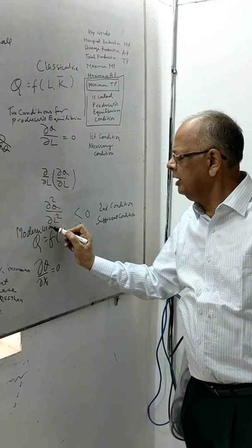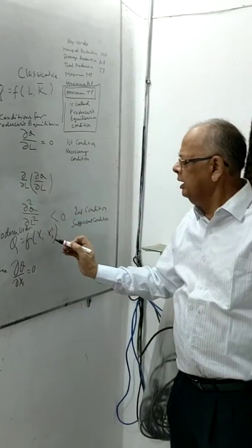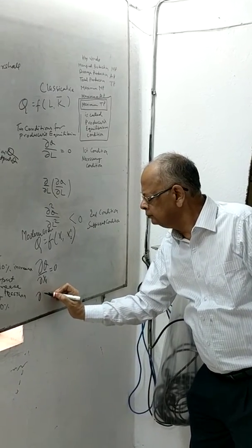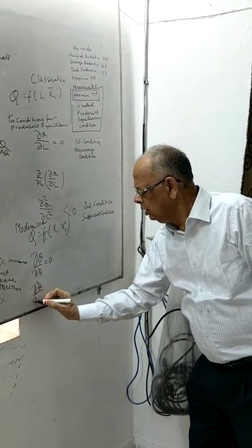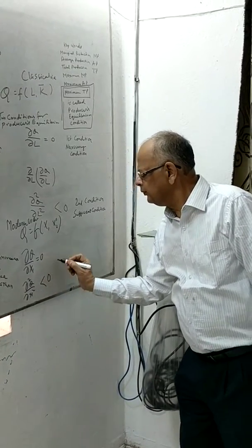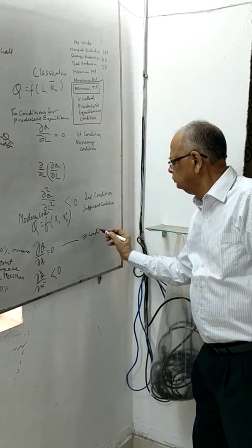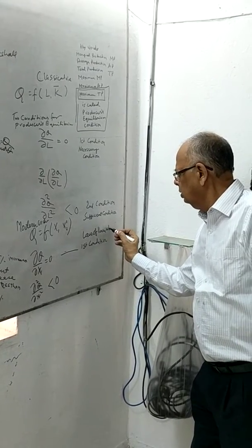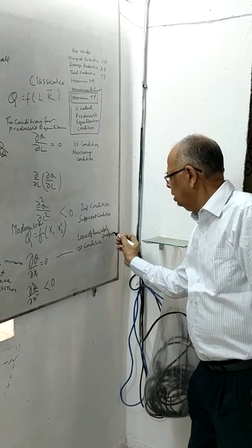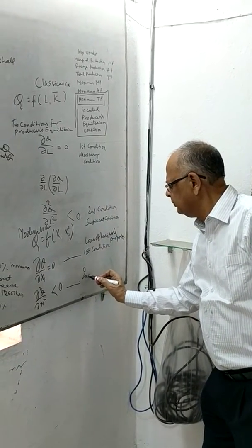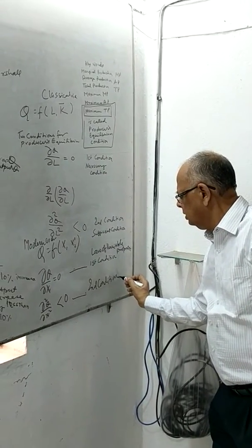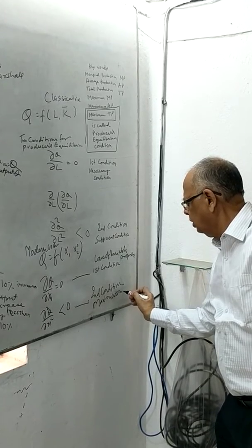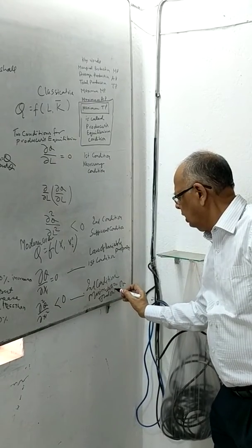These are the first and second conditions of the law of variable proportions. The first condition is ∂Q/∂x₁ = 0, and the second condition — the sufficient condition — is ∂²Q/∂x₁² < 0. Together they establish the maximization of total output.